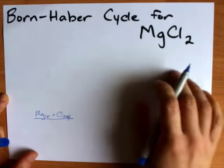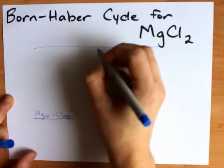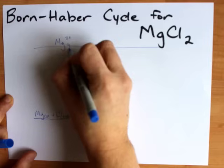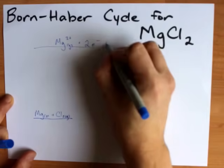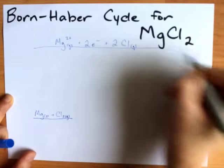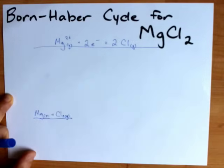Now the Born-Haber cycle eventually is going to get us up to a place where you have your magnesium ion in the gas phase, both electrons separated from it, and two chlorine atoms in the gas phase. That's going to be the very peak of what I'm doing here.